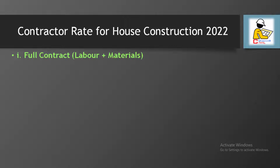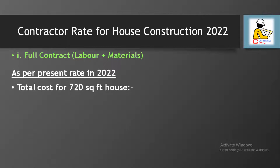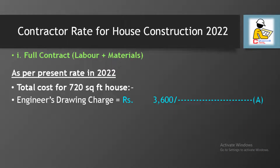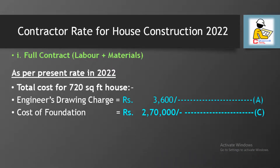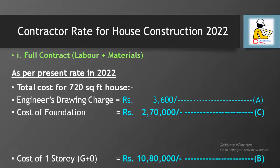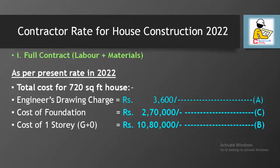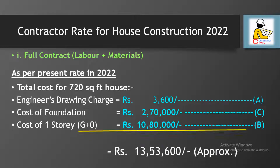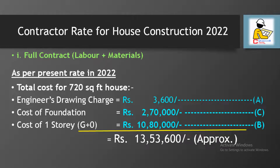Here is the cost summary for 720 square feet under full contract: engineer's drawing charge rupees 3,600; cost of foundation rupees 2 lakh 70,000; and cost of ground floor (one storey) rupees 10 lakh 80,000. The total comes to approximately rupees 13 lakh 53,600. So now you have a good idea about the rate of construction under full contract.